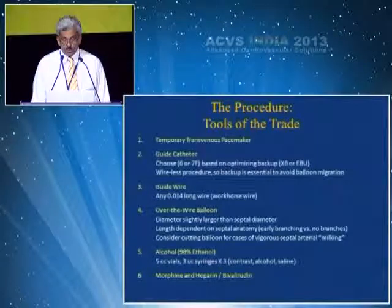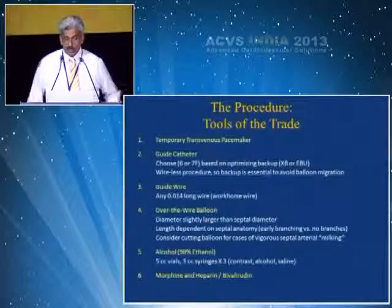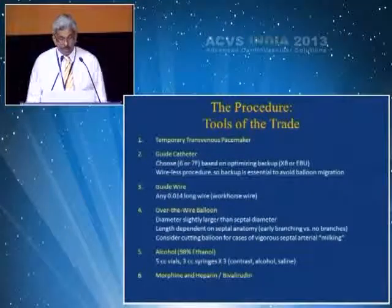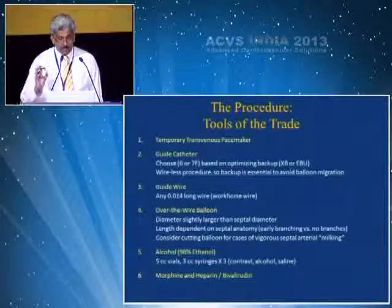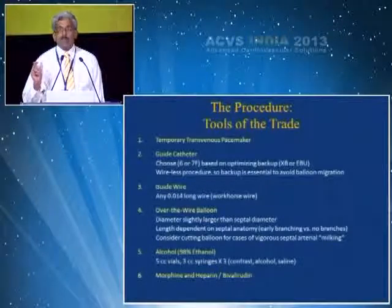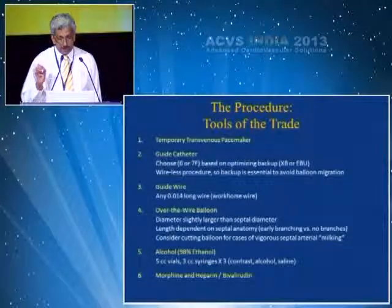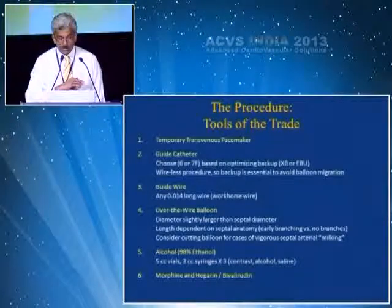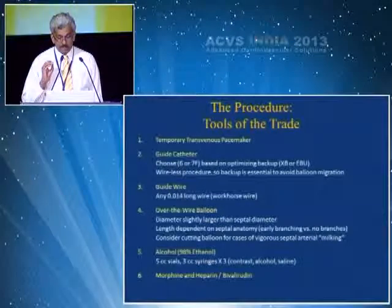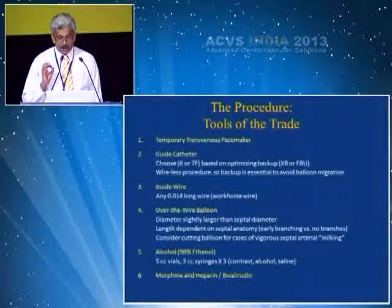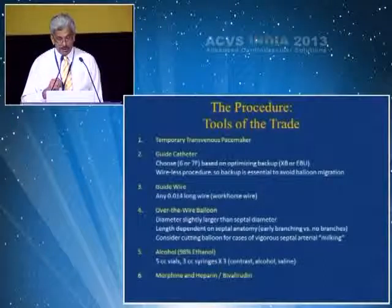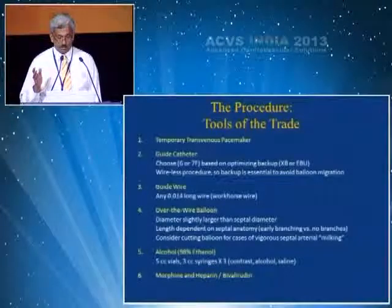This is a wireless procedure, so backup is essential to avoid balloon migration. The guide wire should be any 0.014 long wire, which is your workhorse wire, and an over-the-wire balloon with a diameter slightly larger than the septal artery you are targeting. The length will depend on the septal anatomy — whether there is early branching or no branches — and sometimes you may have to use a cutting balloon for cases of vigorous septal milking seen in some patients.